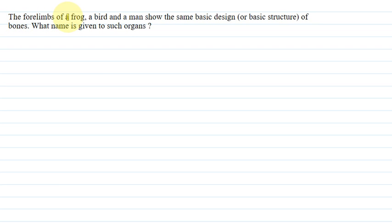The question says that the forelimb of a frog, a bird and a man show the same basic design or basic structure of bones. What name is given to such organs?